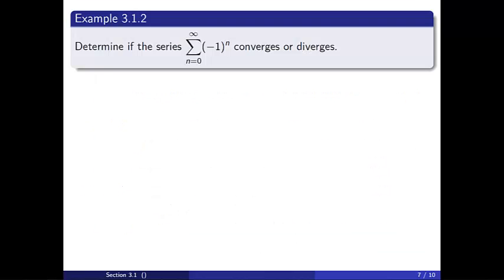We're ready to see the definition in action. For our first example, let's look at the sum of (-1)^n. We need to start by finding the partial sums of this series. Since our series begins with n equals 0, we will start the sequence of partial sums with n equals 0.